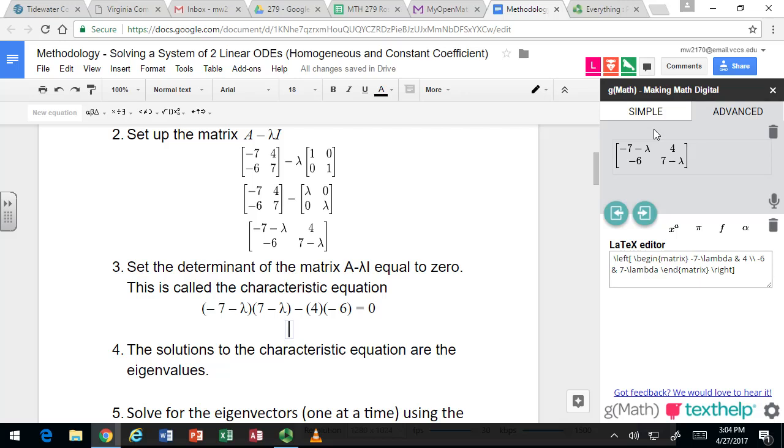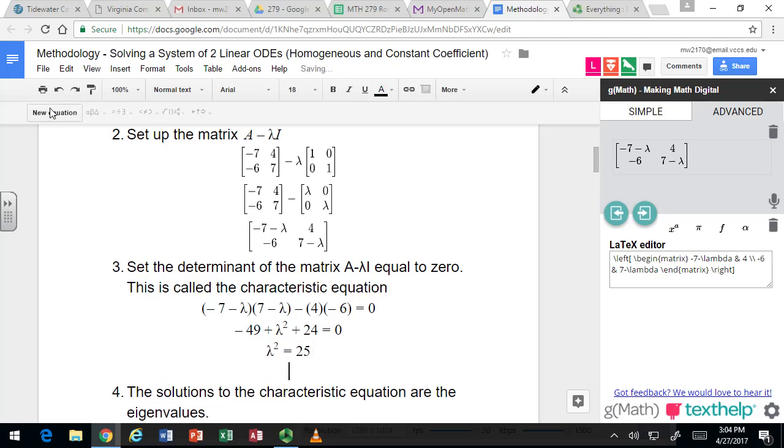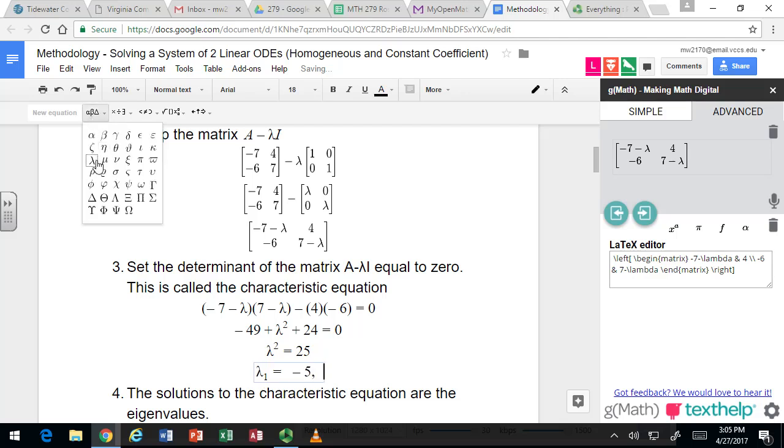If we distribute this out, we get λ² - 25 = 0, so λ² = 25. The two solutions are λ₁ = -5 and λ₂ = 5.